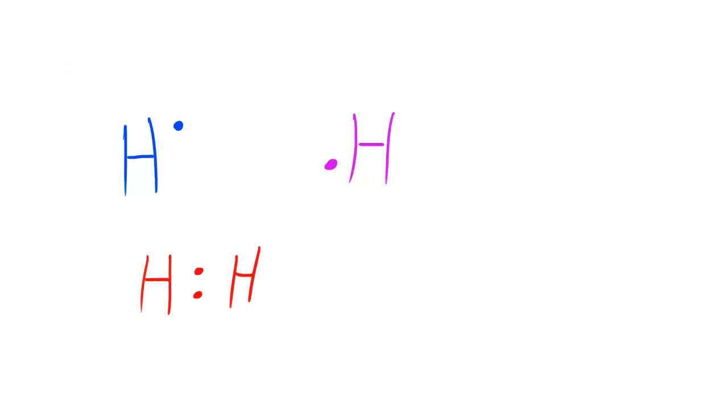However, chemists came up with an even easier way to represent this, it's pretty much the same thing, but it's a modified version where instead of two dots representing a covalent bond, you pretty much use a dash instead. So you have two hydrogens, and instead of drawing two dots, you have a dash.